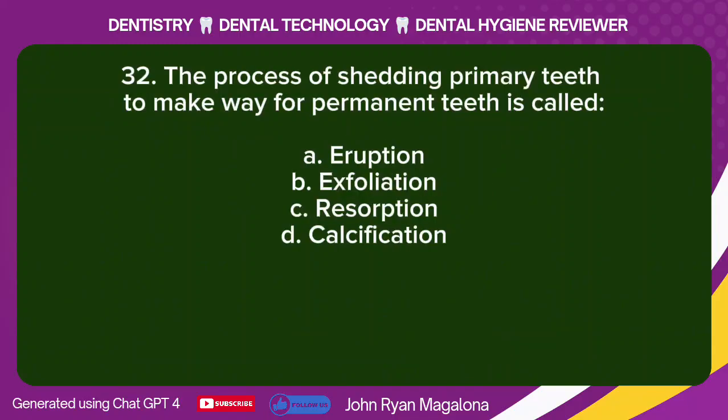Question 32: The process of shedding primary teeth to make way for permanent teeth is called: A. Eruption. B. Exfoliation. C. Resorption. D. Decalcification. Answer: B. Exfoliation.